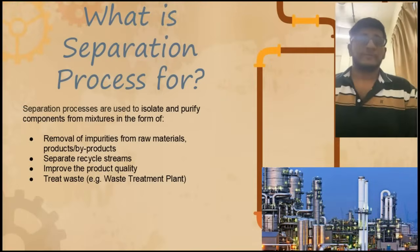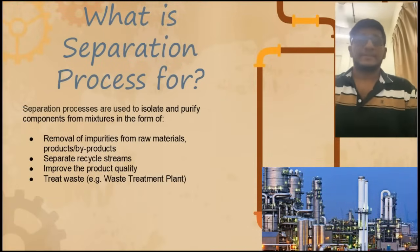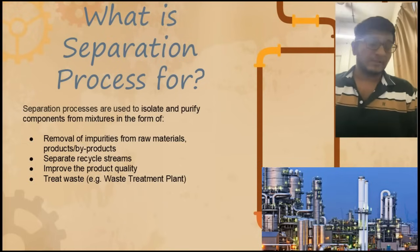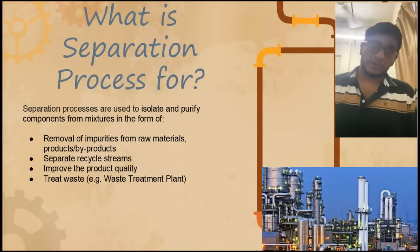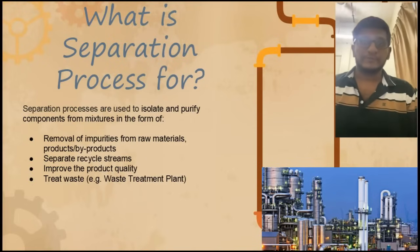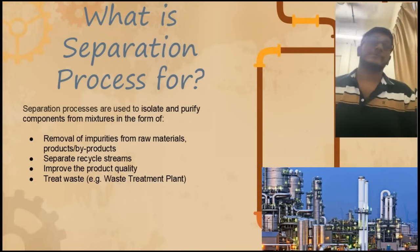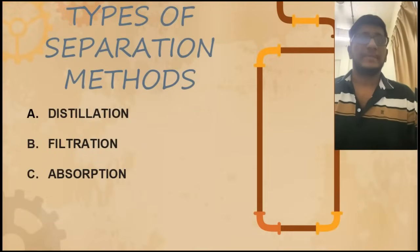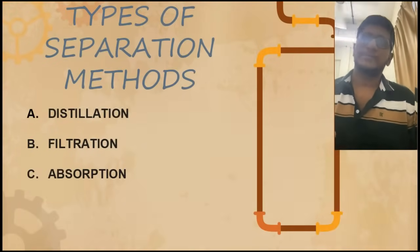Good morning. My topic for today is the role of separation processes. What is a separation process for? Separation processes are used to isolate and purify components from mixtures, in the form of removal of impurities from raw materials, products, or by-products, separating recycled streams, improving product quality, and treating waste — for example, in a wastewater treatment plant. There are three types of separation methods: distillation, filtration, and absorption.